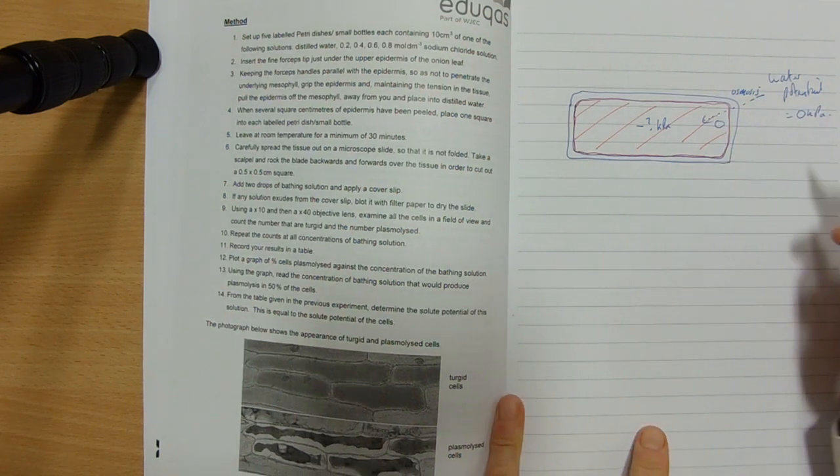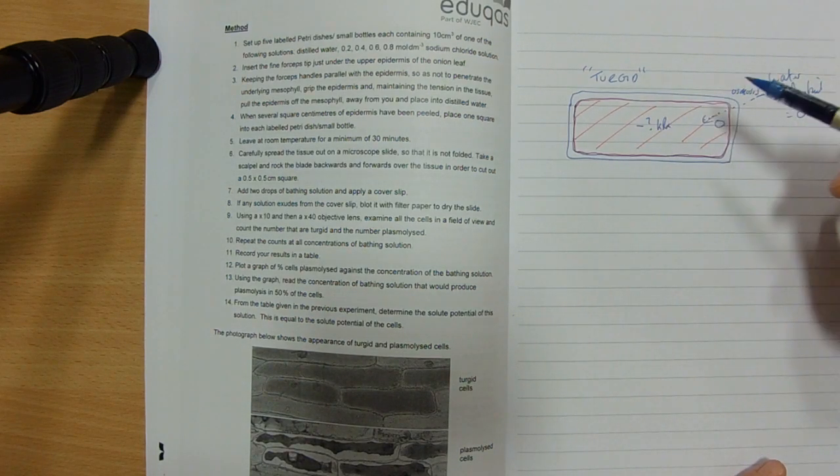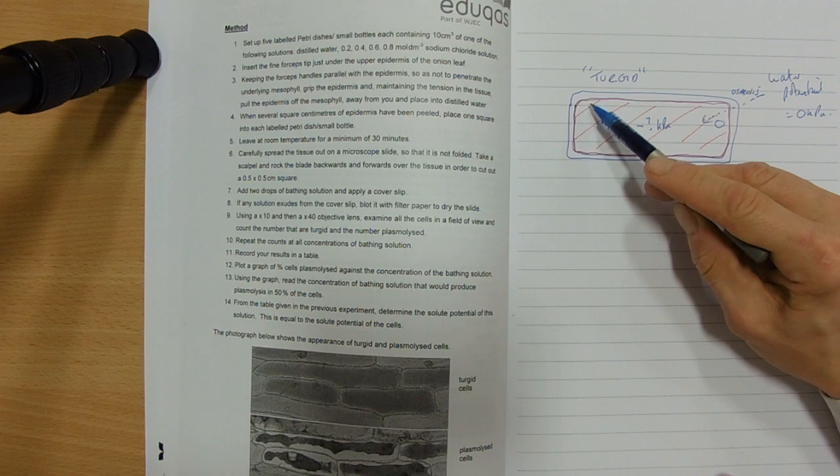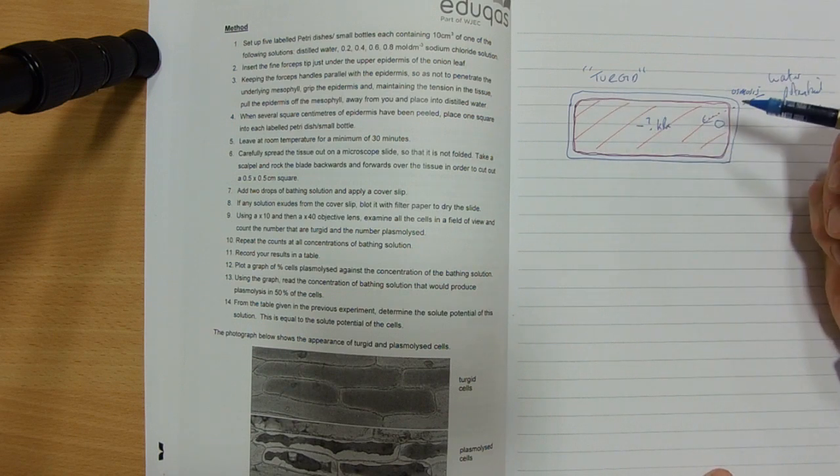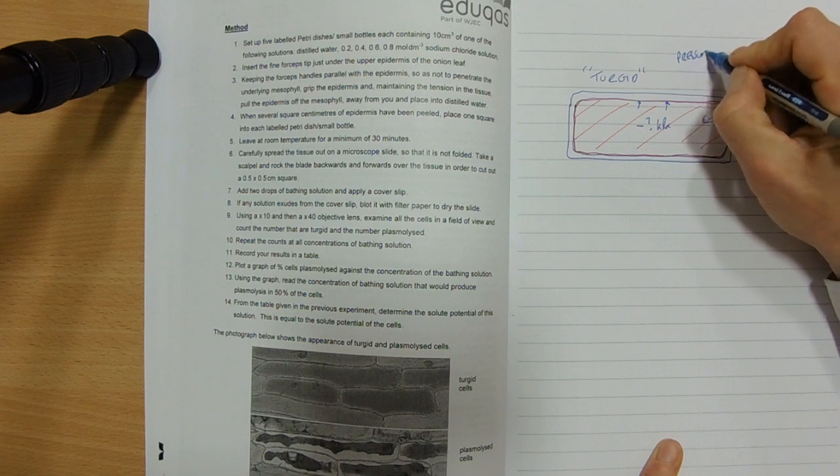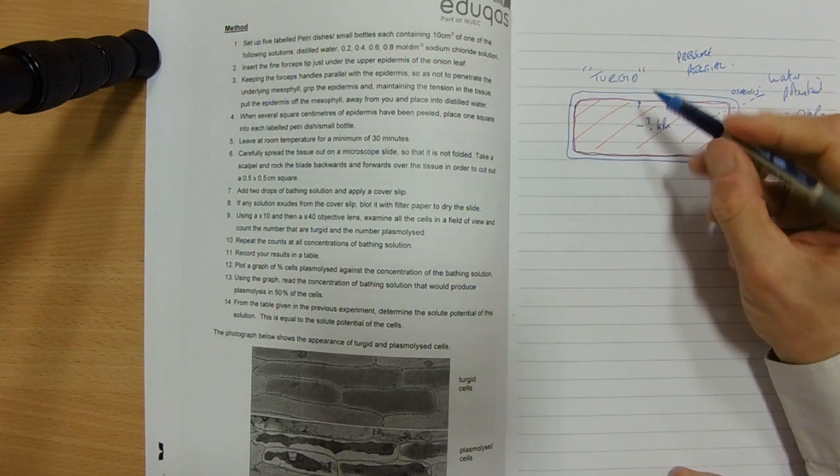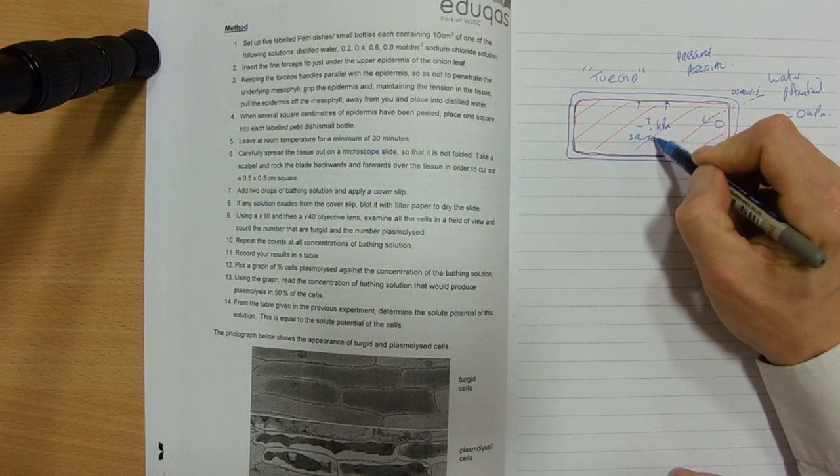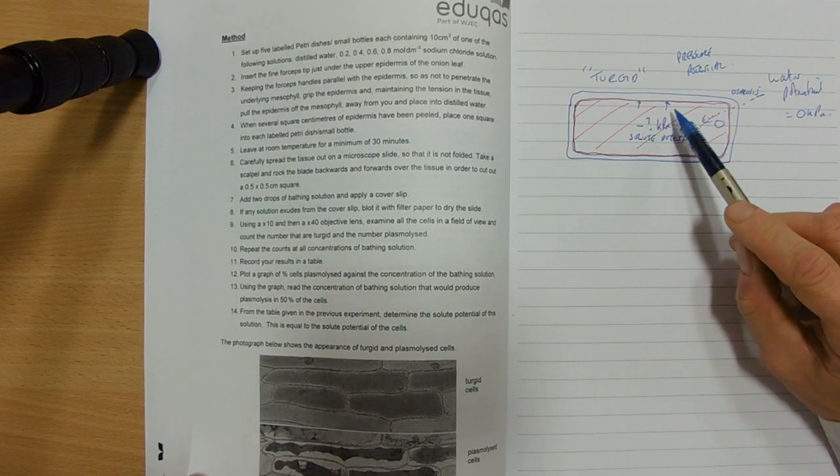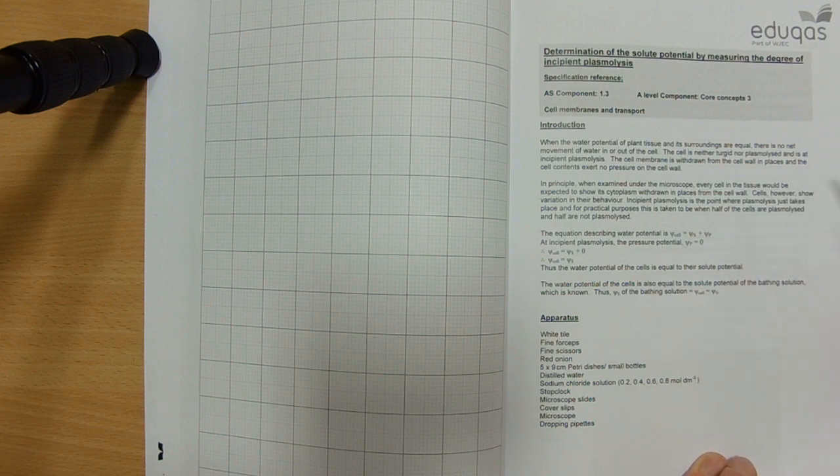And then that cell, in this condition, will be turgid. There will be an expansion of the cytoplasm in volume. So more volume, because there's more water. And that membrane will press up against the wall. And that pressing up against the wall is called pressure potential. So there is the solute potential inside, and pressure potential there. And you've got a little equation where the overall potential of the cell is solute potential plus the pressure potential.